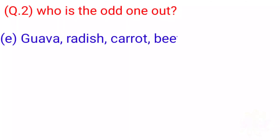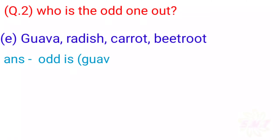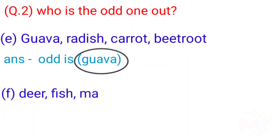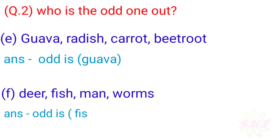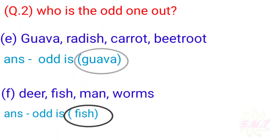E: Guava, Radish, Carrot, Beetroot. Answer: The odd one is Guava. F: Deer, Fish, Man, Worms. Answer: The odd one is Fish.